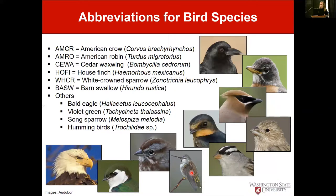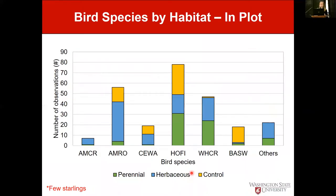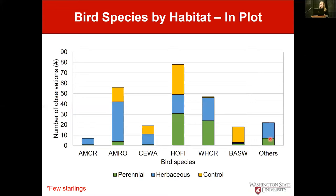Here's the in-plot data — observations within the 50-meter radius. American crows were seen in greater numbers in the herbaceous habitat. American robins and cedar waxwings were very few in the perennial habitat, while relatively equally distributed in herbaceous and control. House finch were observed in the greatest numbers and relatively equally distributed across treatments. White-crowned sparrows were very few in the control but relatively equal in perennial and herbaceous habitats. Barn swallows were observed in greatest numbers in the control and very few in the other two treatments.